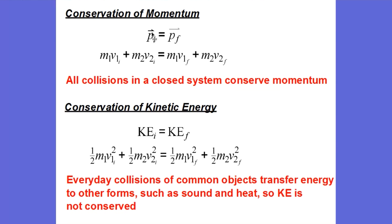If we replace the momentum before the collision with the sum of the momenta of each object, that would be the mass of object 1 times the initial velocity of object 1, and the same for object 2. So M1V1 initial plus M2V2 initial is the initial momentum. That will be the same as M1V1 final plus M2V2 final. And that was the law of conservation of momentum.